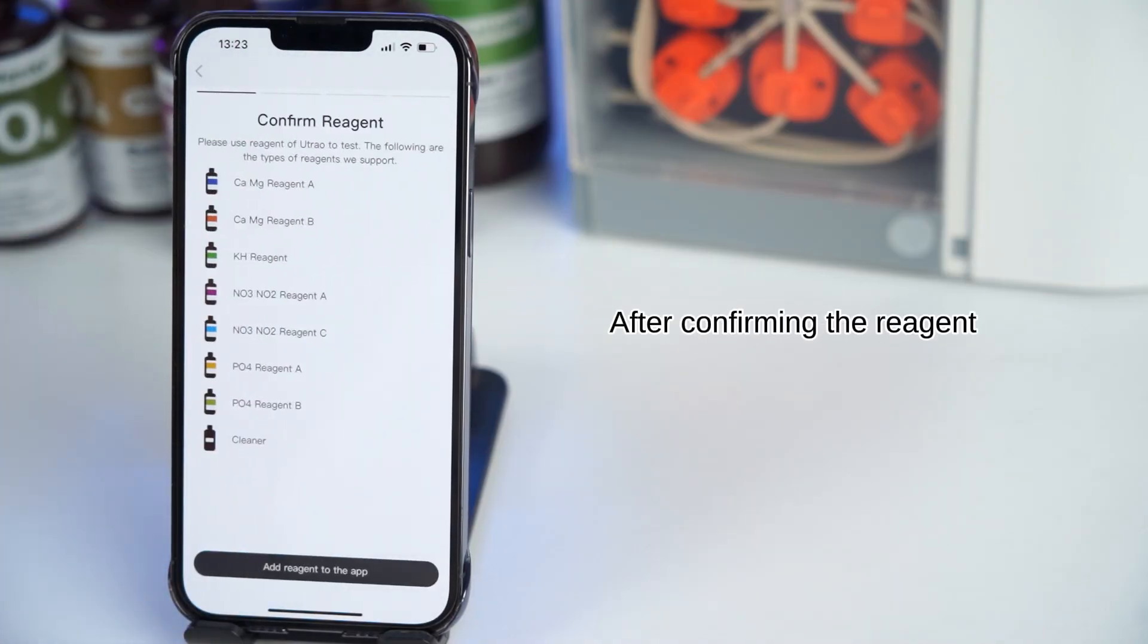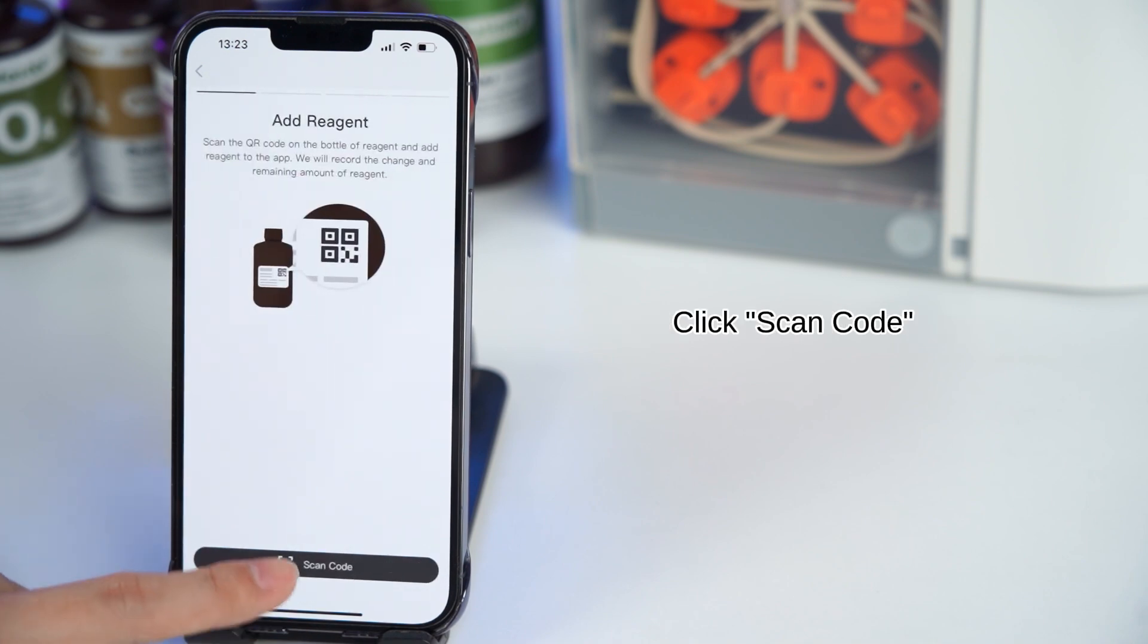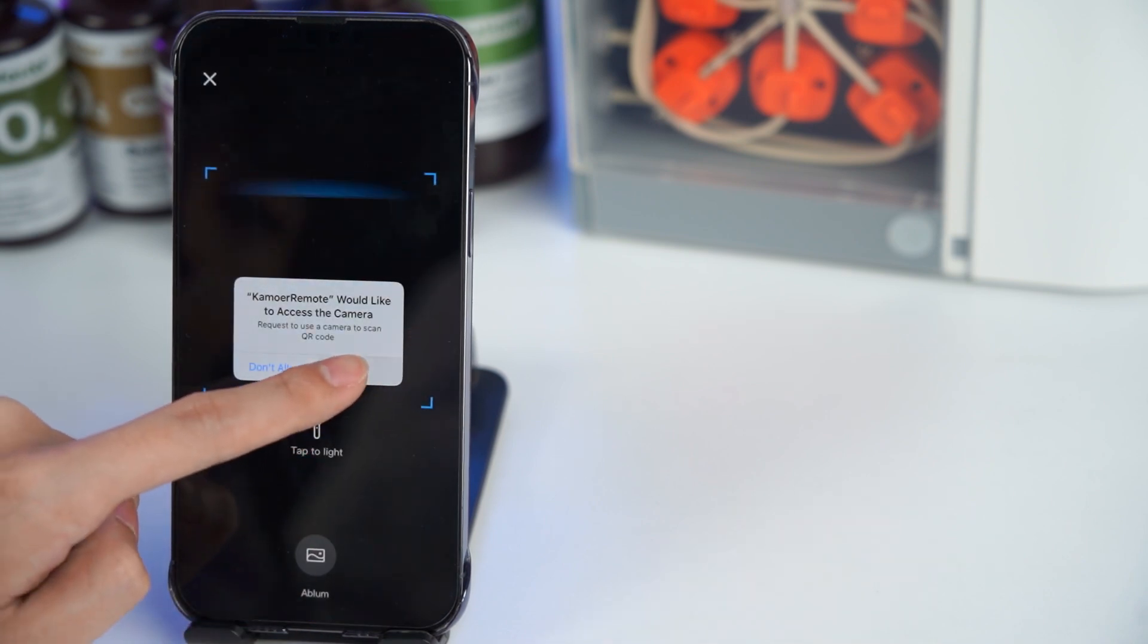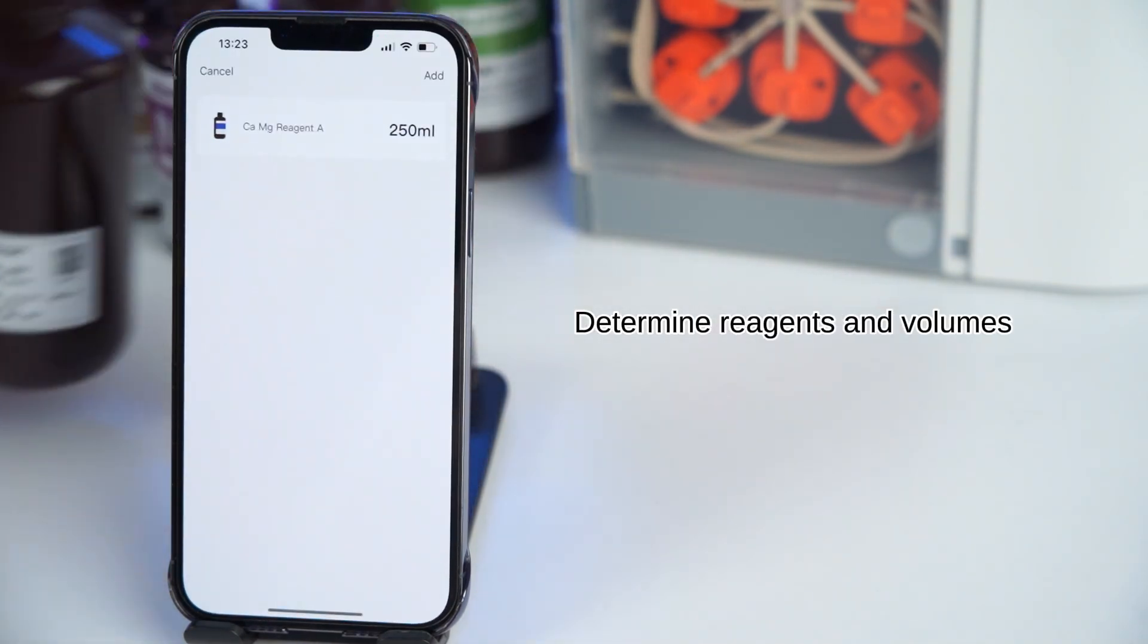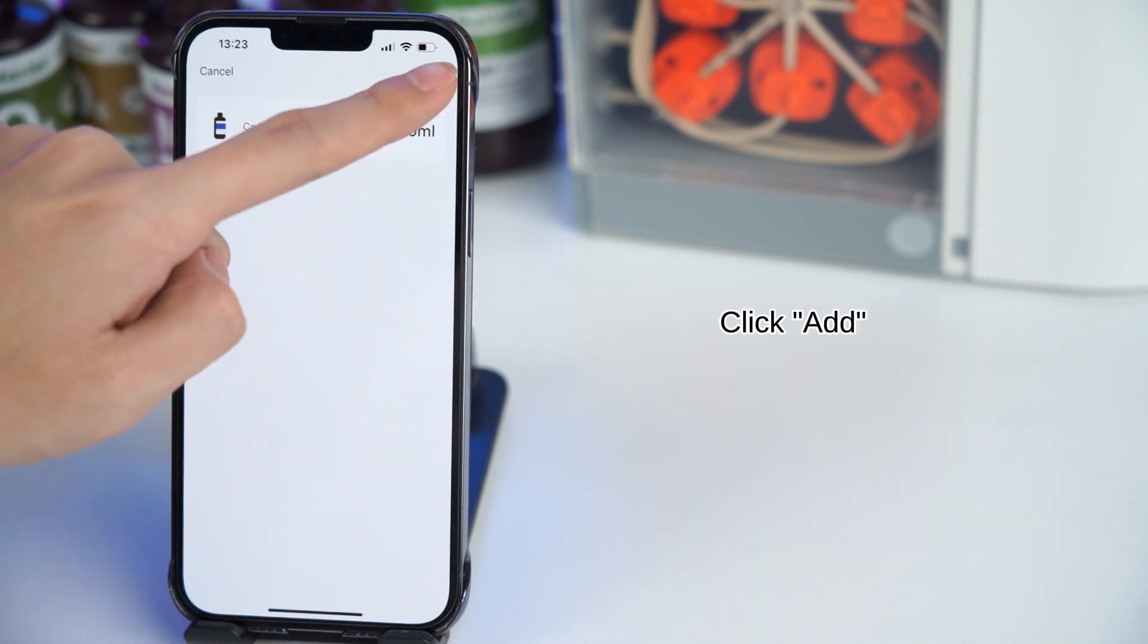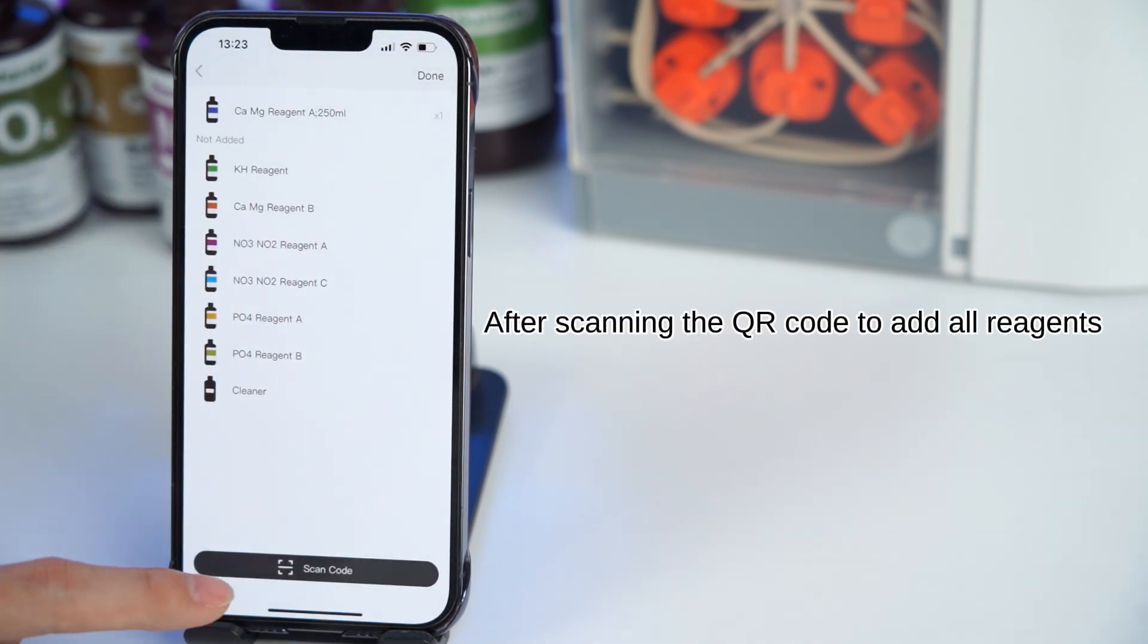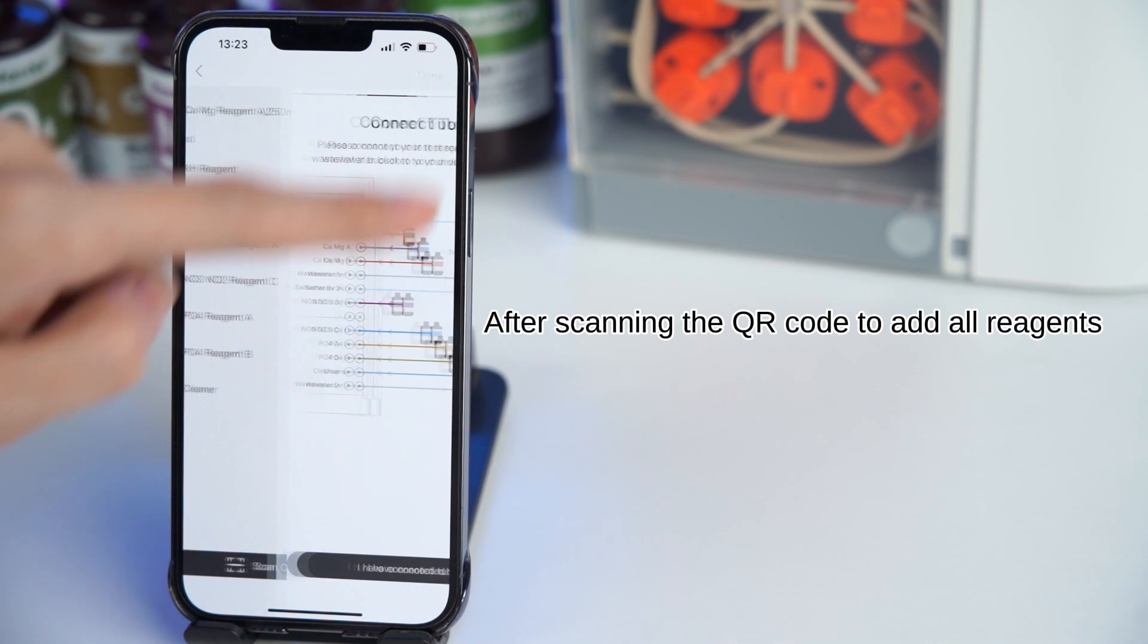Click to start. After confirming the reagent, click Add Reagent to the app. Click Scan Code. Scan the QR code on the bottle. Determine reagents and volumes. Click Add. After scanning the QR code to add all reagents, click Done.